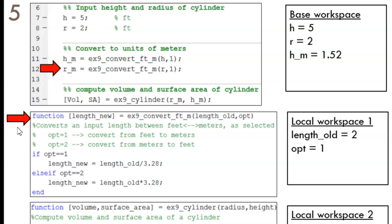This process is repeated as we now pass in the r value into the converter function. This is a brand new running of the function, so any values that were used before are not remembered. The next length new is computed to be 0.61, and we are just about to jump from the function back into the script.